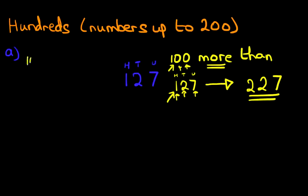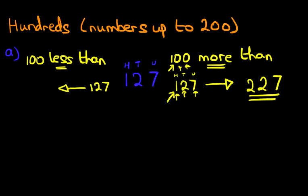Now let's do 100 less than 127. Let's write the number down: 127. Are we going to go forwards or backwards? Well it's less than, so therefore we're going to go backwards. The seven is not going to change because we're going back by zero, so that remains seven. The two is not going to change because it's going back by zero, so that remains two. As for the one, well that is going back by one. One going back by one is zero, but there's no need to write it. So 100 less than 127 is 27.